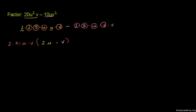The factor is 10uv, and what remains in the parenthesis is 2u minus v. So the final factored expression is 10uv(2u - v).